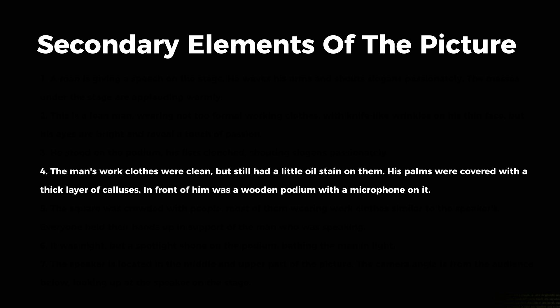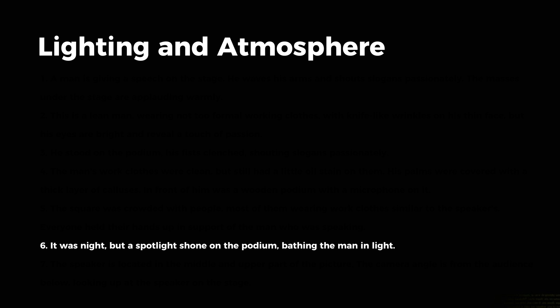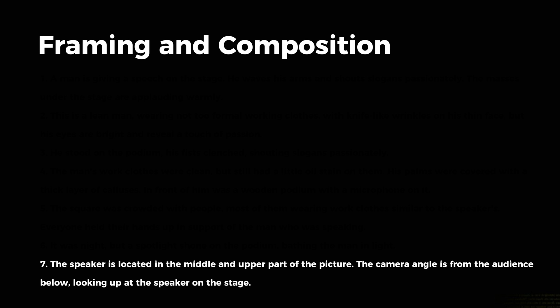In the secondary elements section, you need to describe the secondary elements surrounding the main subject. Their main function is to enhance the details of characters, perfect the story of the entire picture, or establish a relationship with the surrounding scenes, making things more full and rich. In the settings and background section, you need to describe the background, time period, or place where the subject is located, or even a historical moment. In the lighting and atmosphere section, briefly describe the tone and atmosphere of the picture. In the framing and composition section, briefly describe the positional relationship between the main subject and other secondary elements.